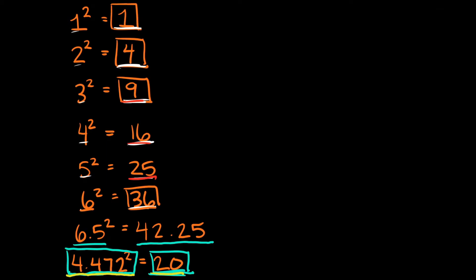That's one way you can look at perfect squares. The other way is: if you take the square root of a number and your answer is a whole number, then the number you took the square root of is a perfect square.